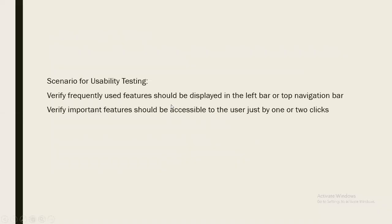Next, verify that important features are accessible to the user. In the right bar we have to check user options are reachable in one or two clicks — for example, registration or login operations. In an e-commerce application, I should be able to search for a product in one or two clicks.